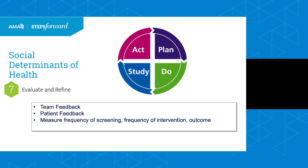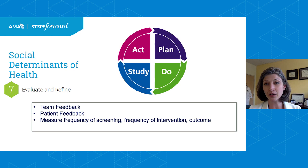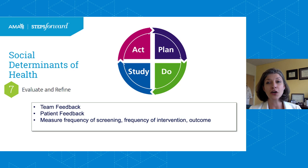Step seven is to evaluate and refine. If you're starting small, you want to elicit team feedback and patient feedback. If you can look at outcomes — even EHR or medical record review — you want to do that. You may measure the frequency of screening, the frequency of intervention, or the actual impact on outcomes. The idea is to take that feedback, take that data and act — refine your intervention and then start all over again.